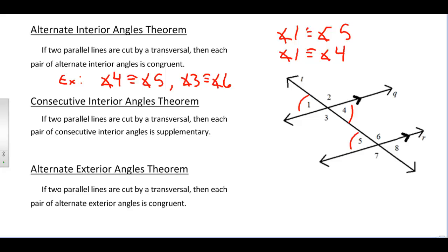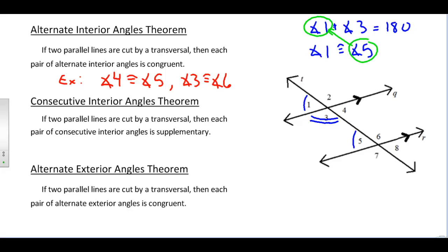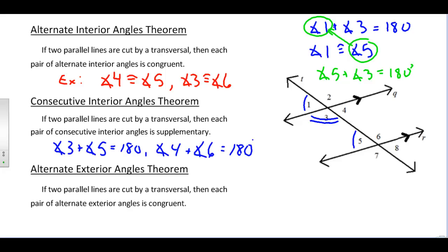The Consecutive Interior Angles Theorem says that if two parallel lines are cut by a transversal, then each pair of consecutive interior angles is going to have to be supplementary — meaning they add up to 180 degrees. This is true because corresponding angles 1 and 5 are congruent, and angles 1 and 3 form a linear pair adding up to 180 degrees. By substitution, angle 5 plus angle 3 also adds up to 180. This works for both sets, so not only do angles 3 and 5 have to be supplementary, but angles 4 and 6 as well.